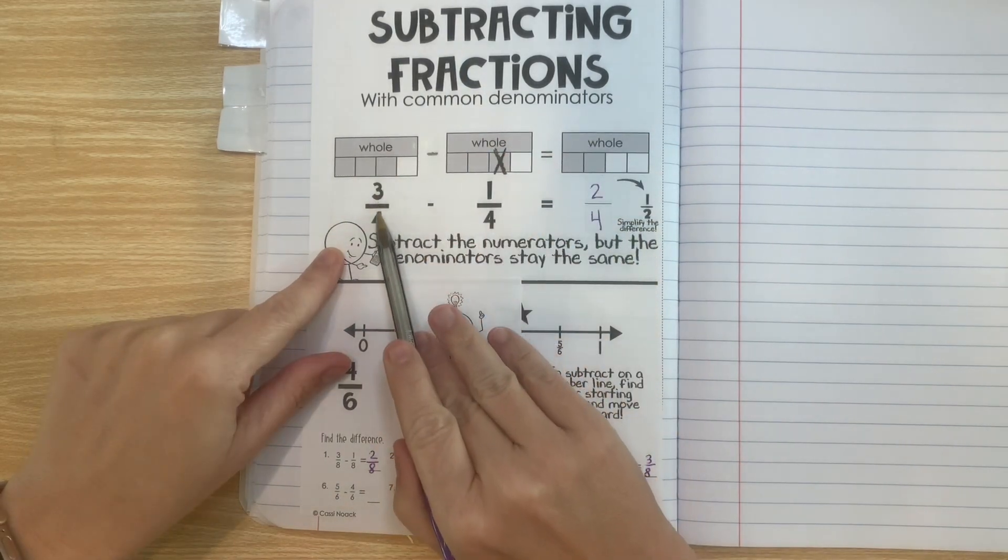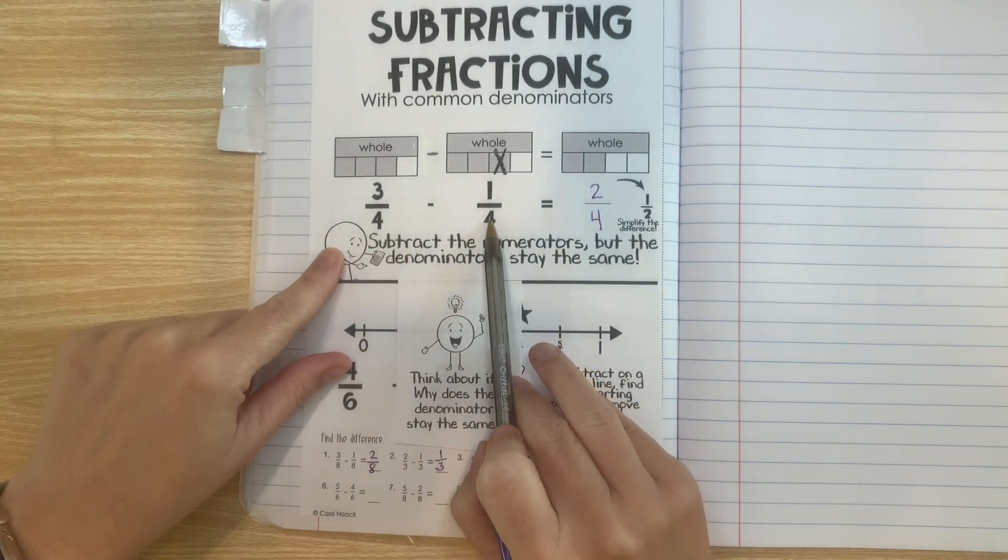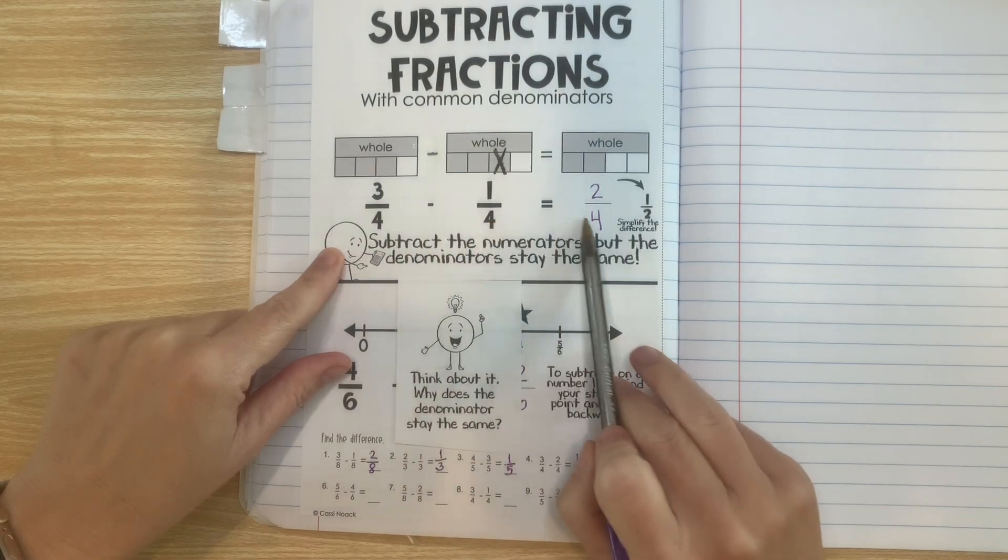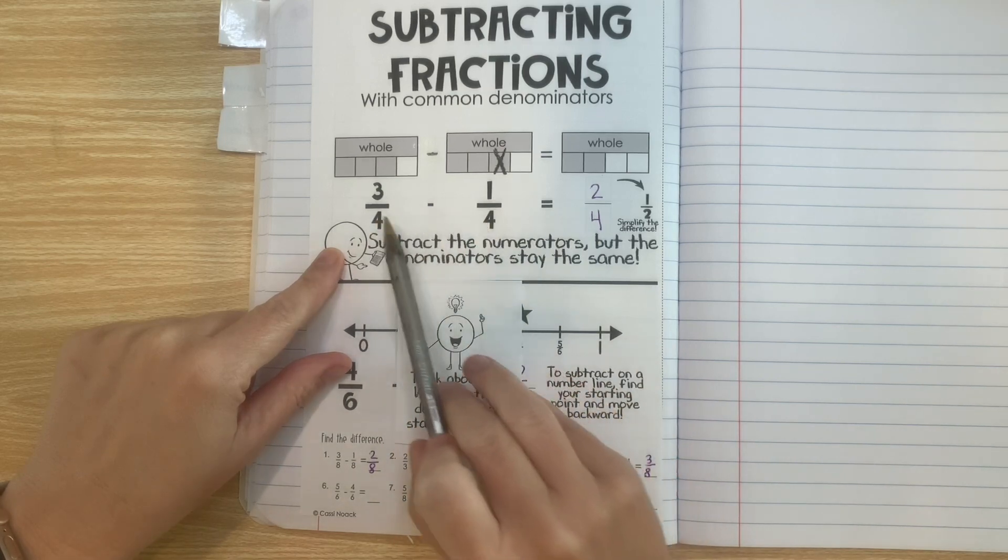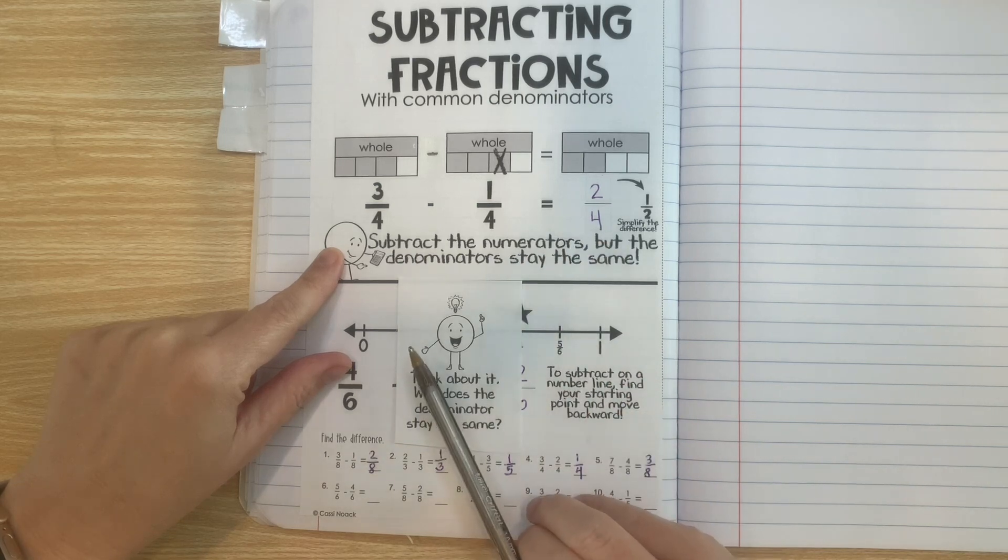Whether you're adding on to fourths or taking away from fourths it doesn't really matter because it's still going to be fourths. If you were to add these together or subtract them then you would have a denominator that's totally different.